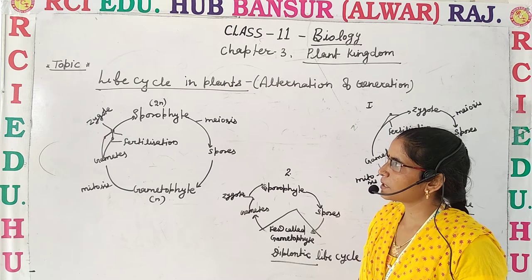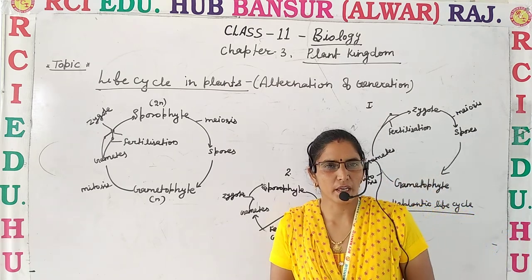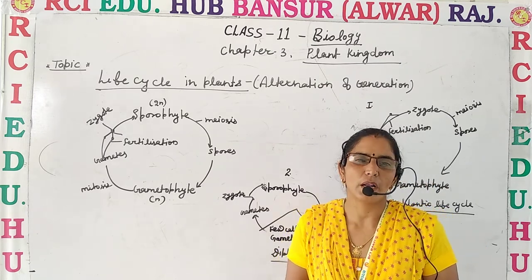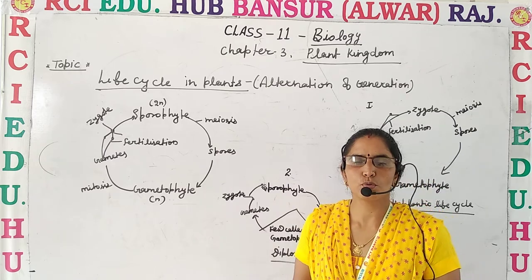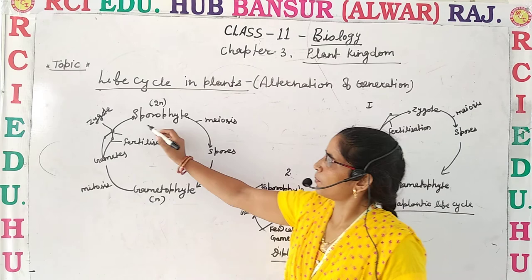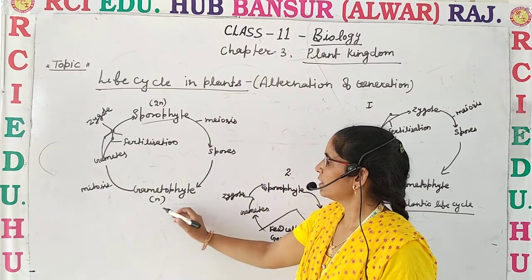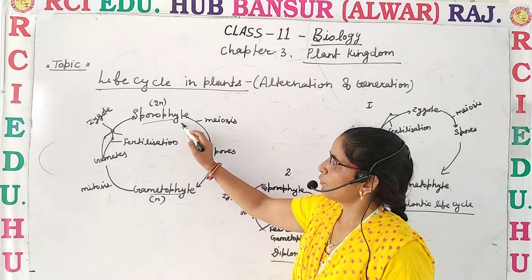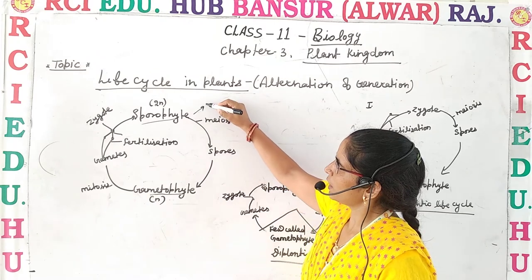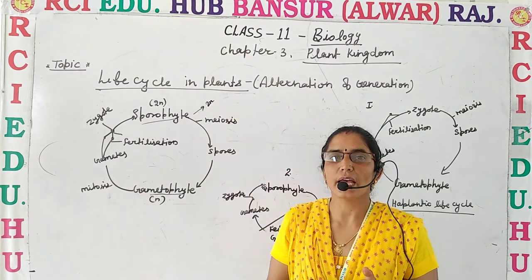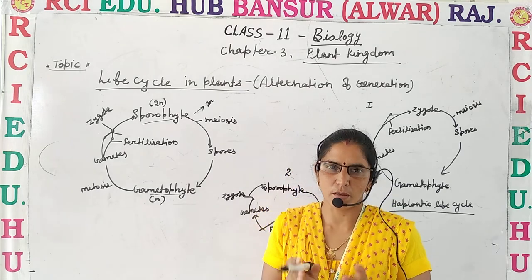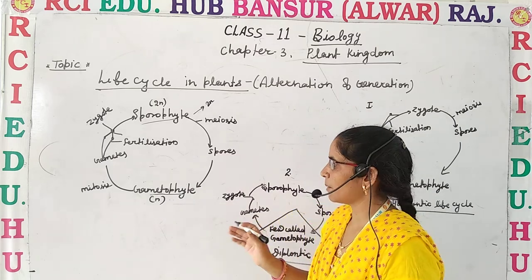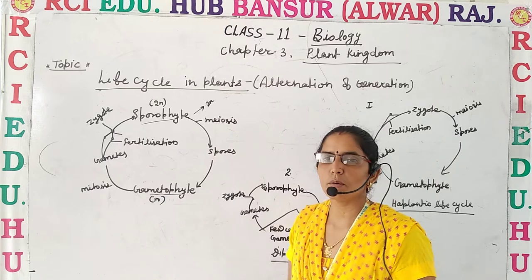Let's discuss life cycle in plants. Generally, plants show two stages: one is the sporophyte or sporophytic stage, and another is the gametophyte or gametophytic stage. Sporophytes are diploid in nature because they have chromosomes number always double, whereas the gametophyte or gametophytic stage is haploid and has half the number of chromosomes.